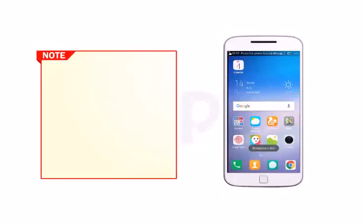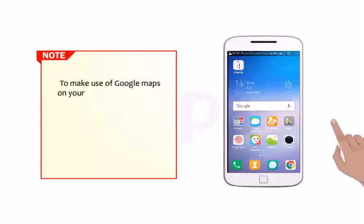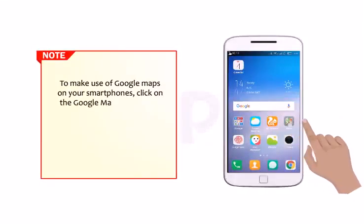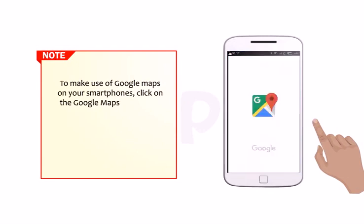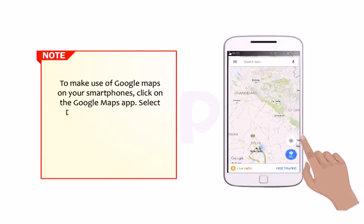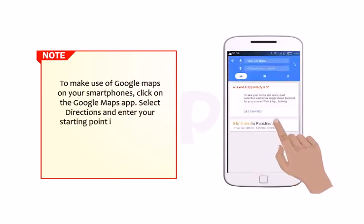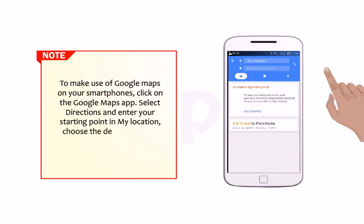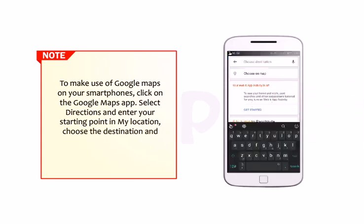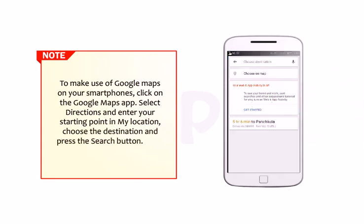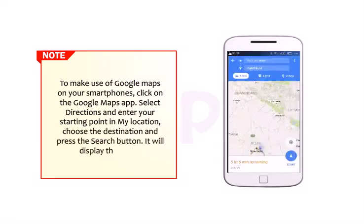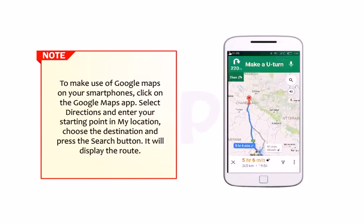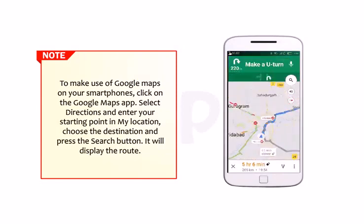To use Google Maps on your smartphone, click on the Google Maps app. Select directions and enter your starting point in My Location. Choose the destination and press the search button — it will display the route with turn-by-turn navigation instructions.